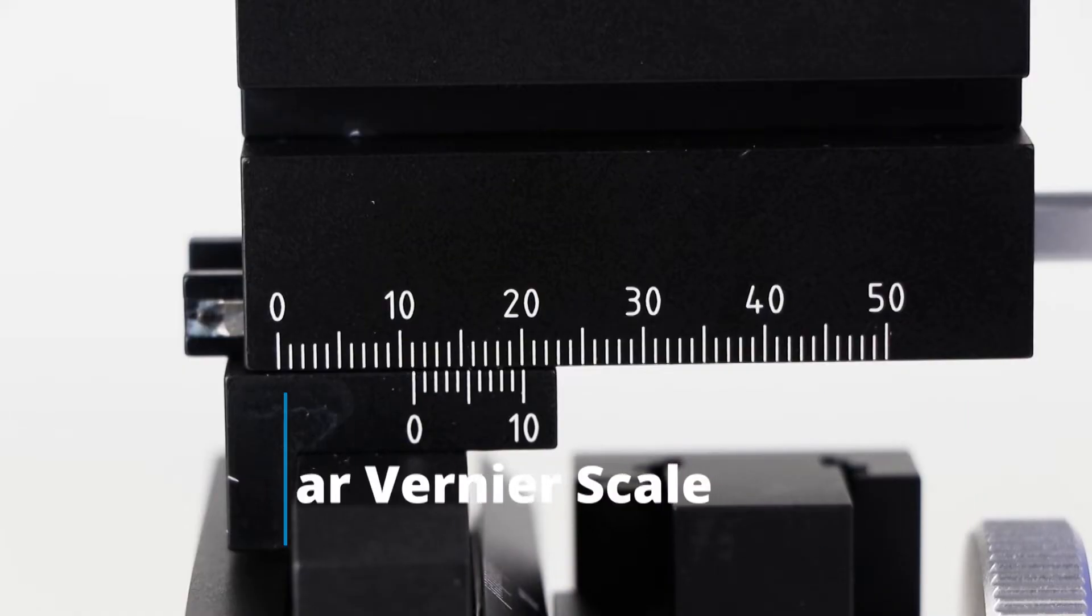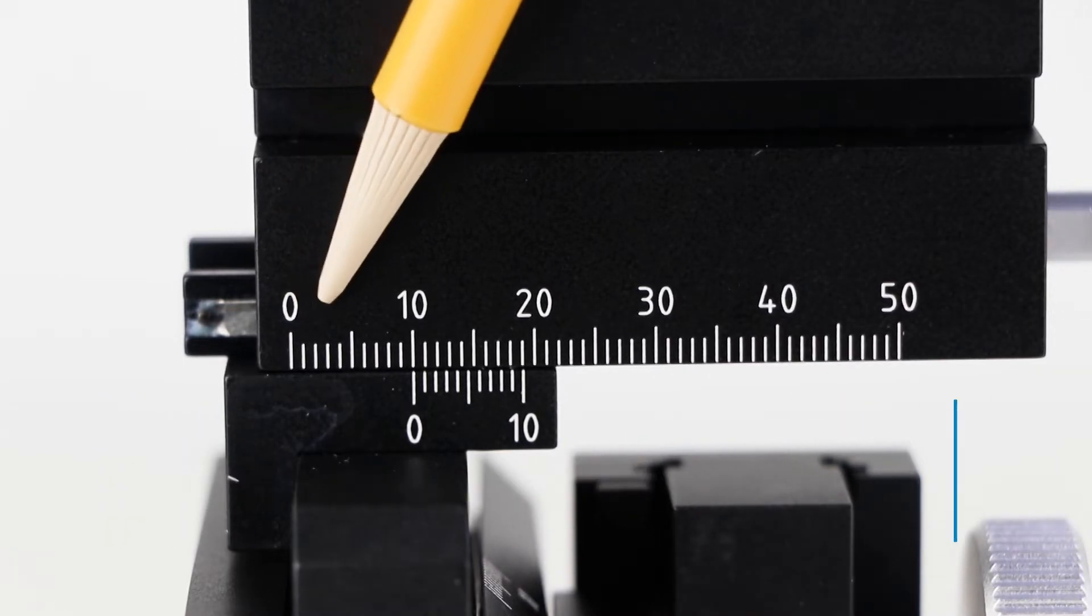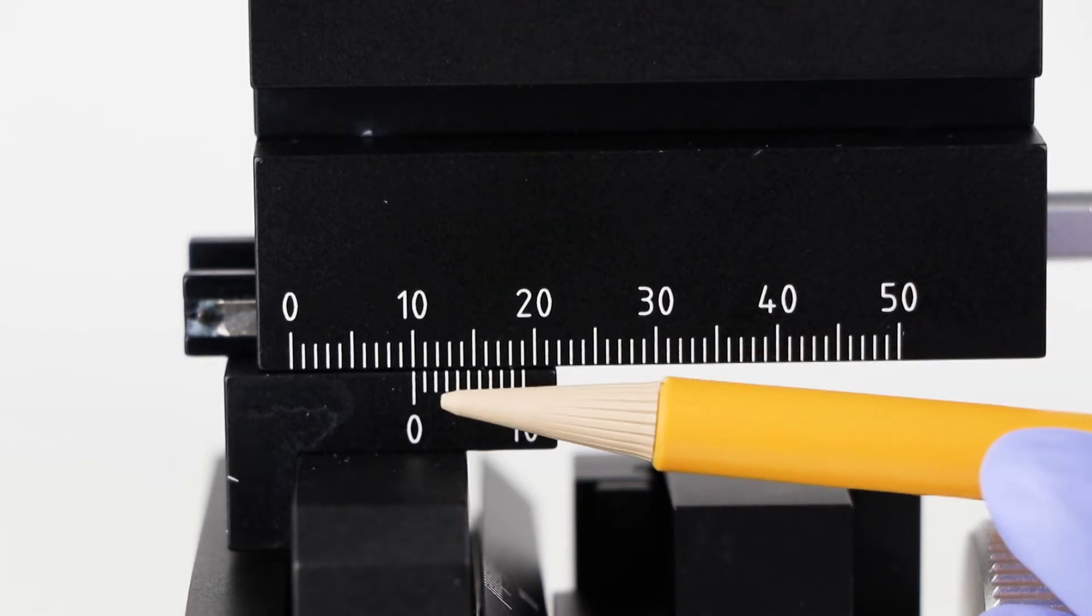The Vernier scale is marked with divisions that are slightly smaller than the divisions of the main scale. Here's the main scale, and this is the Vernier scale.